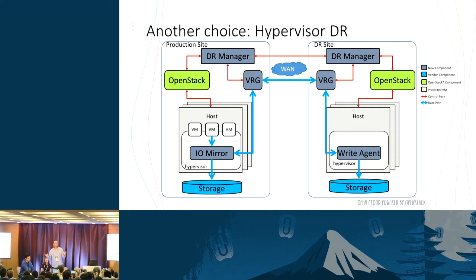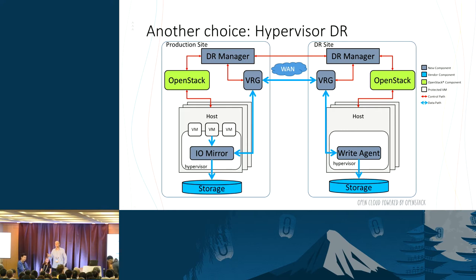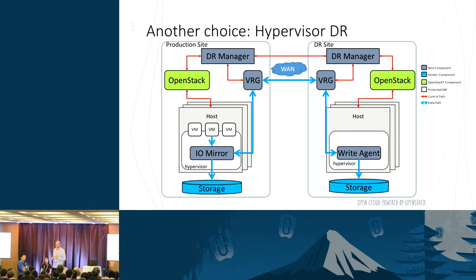From an orchestration point of view, we have the VRG — the Virtual Replication Gateway — which is responsible for establishing the WAN connectivity, compressing the data, encrypting the data, and potentially D-duping in the future. The DR manager orchestrates the disaster recovery, and OpenStack is used to launch VMs and create volumes on both sides. The key components are the IOMirror agent in the hypervisor and the write agent on the recovery side.